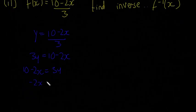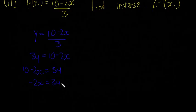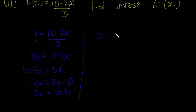And it's going to be minus 2x is equal to 3y minus 10. I'm going to multiply everything by minus 1. It's going to be 2x is equal to 10 minus 3y. And that means that x is equal to (10 minus 3y) over 2.